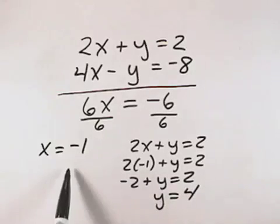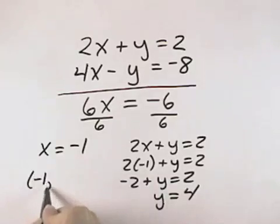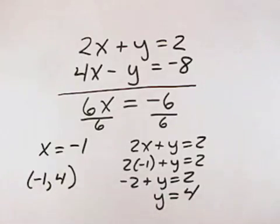So our solution is x equals negative 1, y equals 4, which can also be expressed as the ordered pair negative 1, 4.